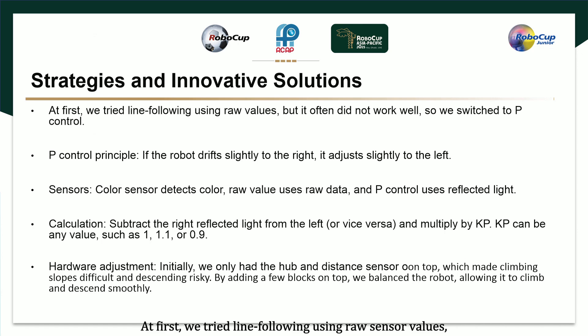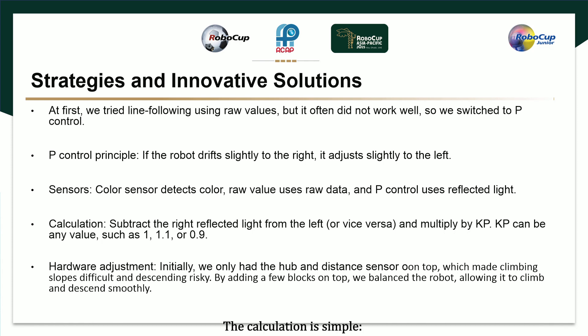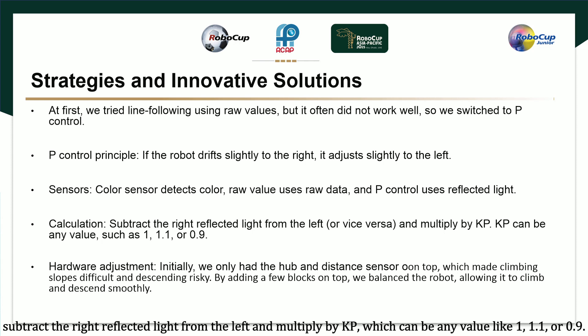We first tried line following using threshold sensor values, but it often didn't work well, so we switched to P control. With P control, if the robot drifts slightly to the right, it adjusts slightly to the left. We use the color sensor for color detection, raw values for color data, and reflected light for P control. The calculation is simple: subtract the right reflected light from the left and multiply by Kp, which can be any value like 1, 1.1, or 0.9.